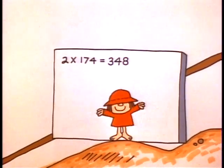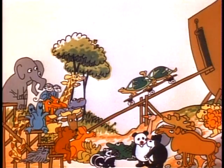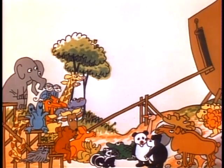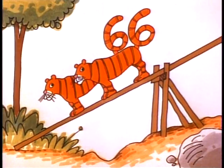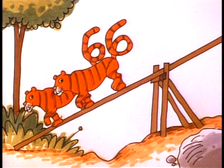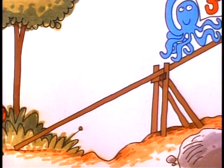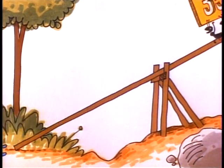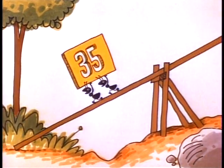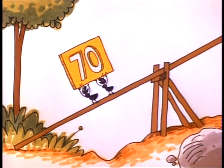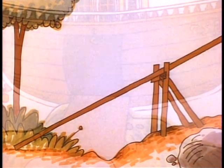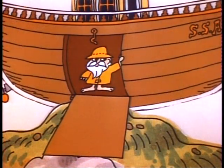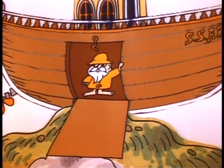Elementary, elementary — twice thirty-two is sixty-four. Elementary! Twice thirty-three is sixty-six. Elementary! Twice thirty-four is sixty-eight. Elementary! Twice thirty-five is seventy. Elementary! Yes, it's elementary!